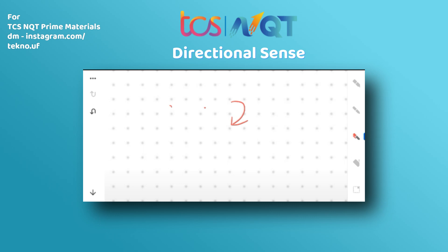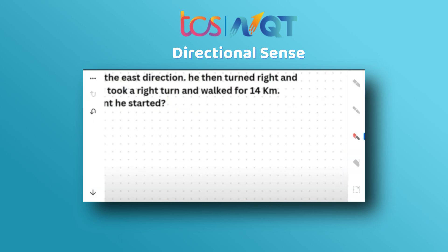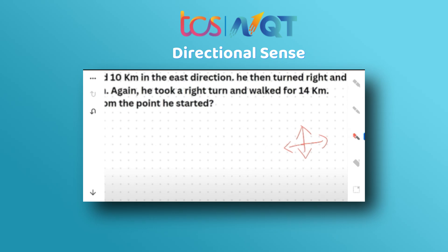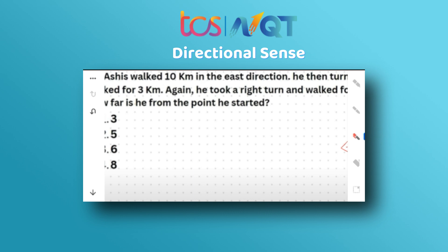The first question is based on difference between two points. The first problem is: Asis walked 10 kilometers in the east direction. He then turned right and walked for 3 kilometers. Again, he took a right turn and walked for 14 kilometers. How far is he from the starting point? I hope you know north, east, south, and west directions. So now let's start solving the problem.